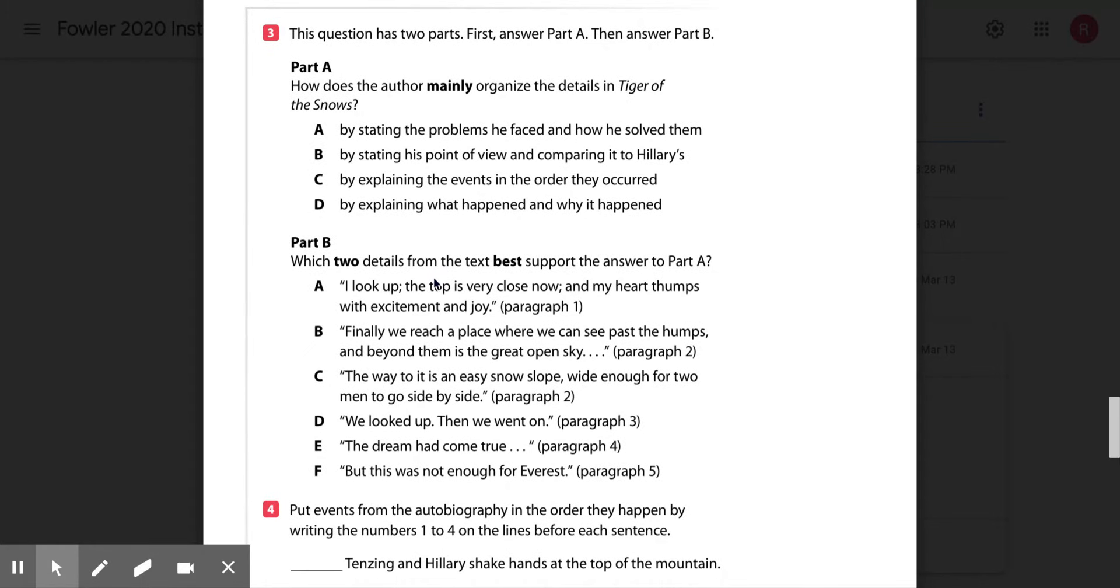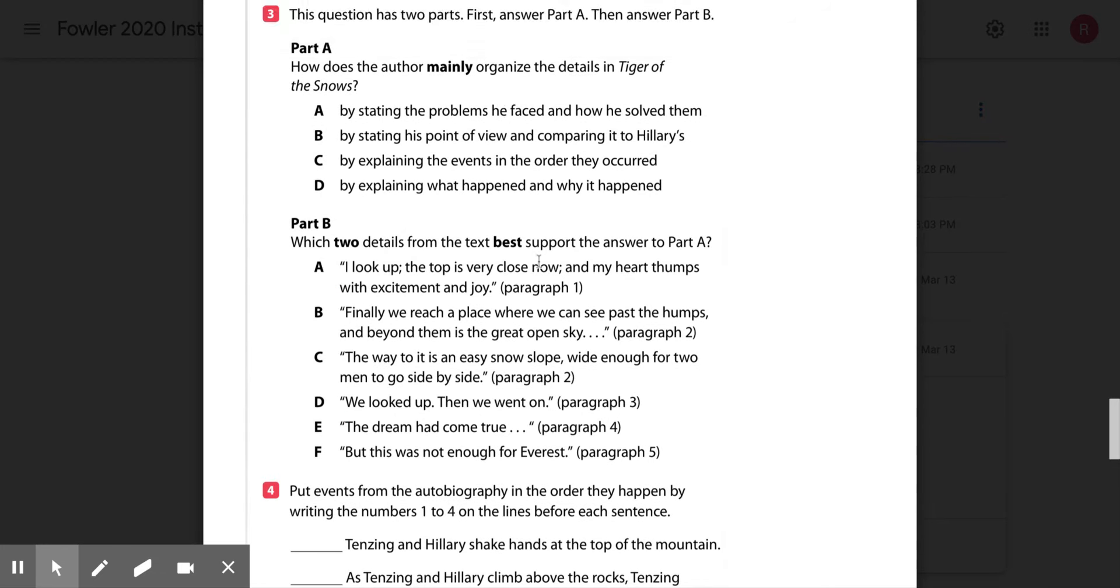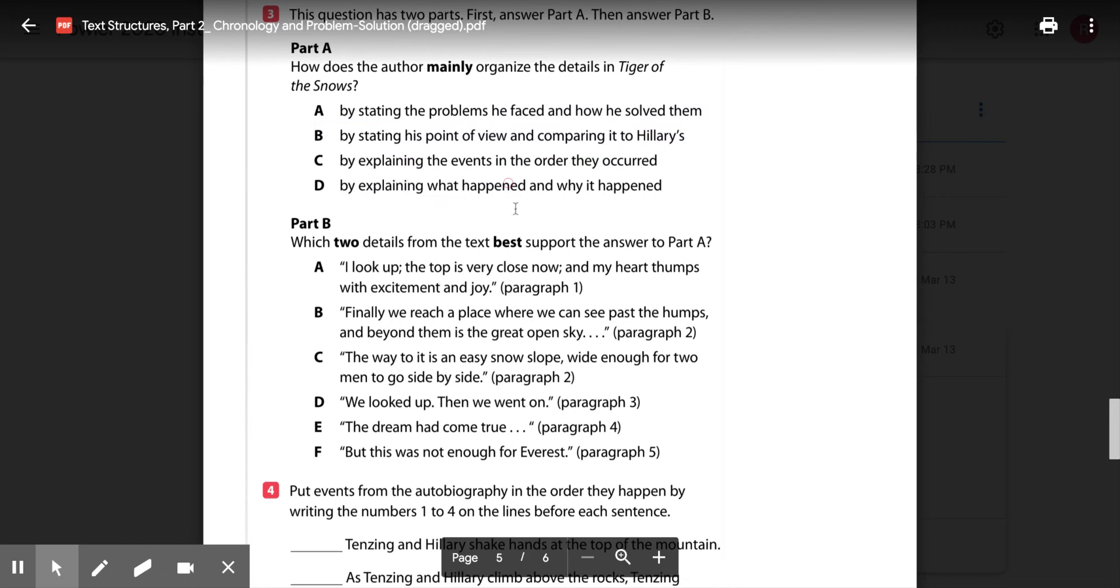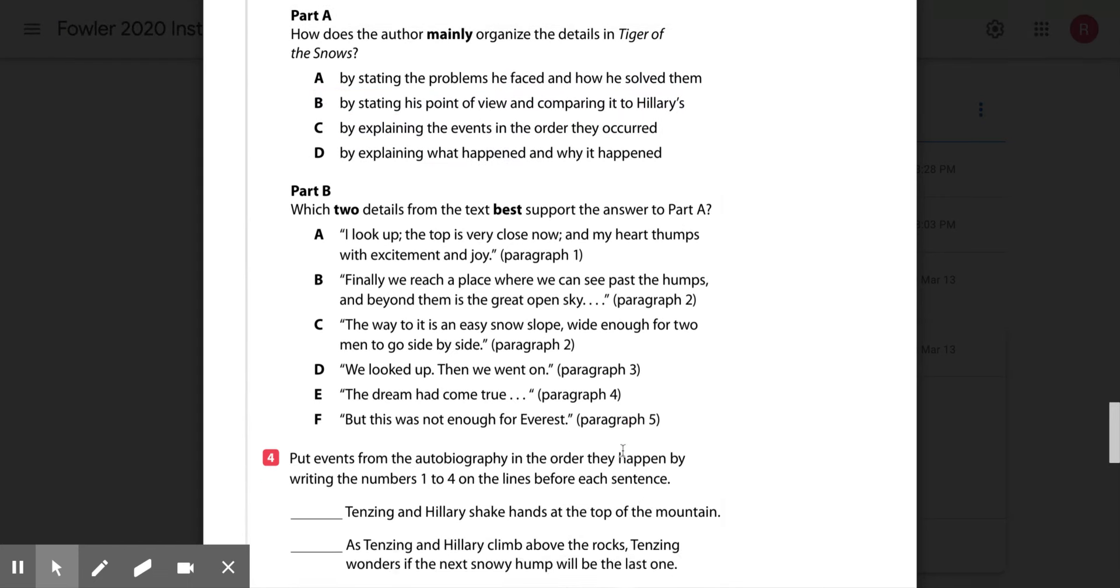How does he organize the Tiger of the Snows? Part B, which two details from the text best supports the answer to part A? So you're going to choose two of these choices that supports your answer here, and if you notice it tells you which paragraph it comes from, so you can go back and read that paragraph.